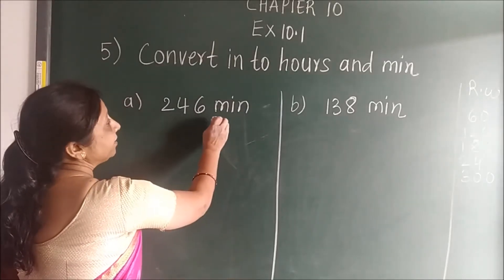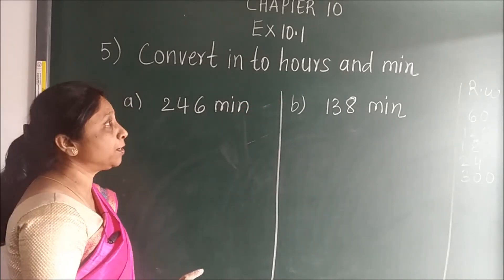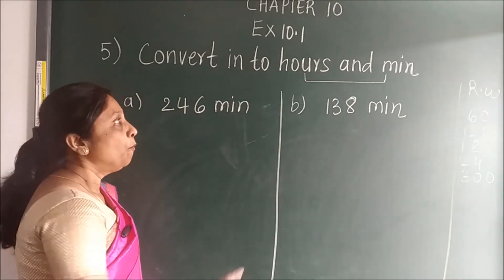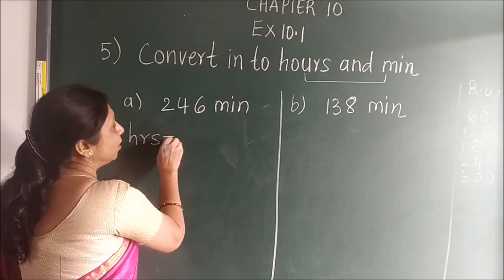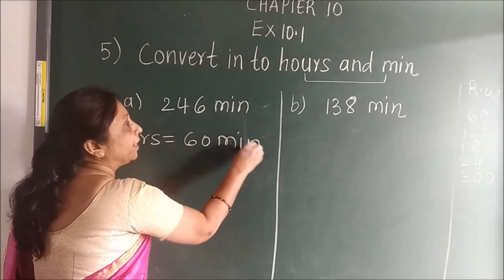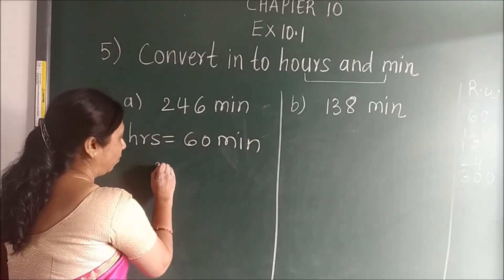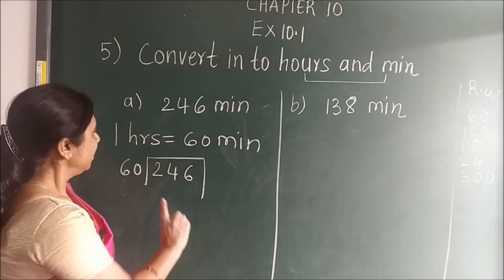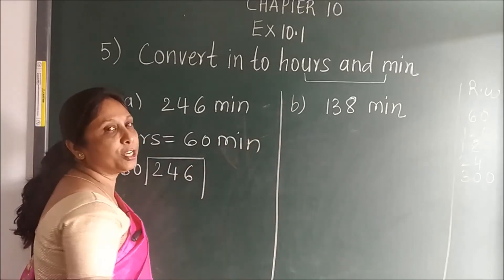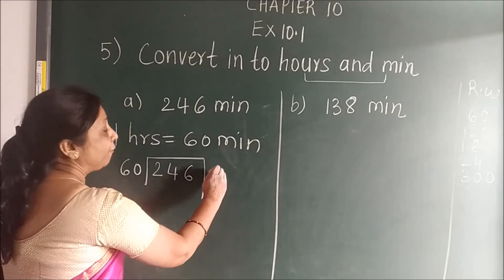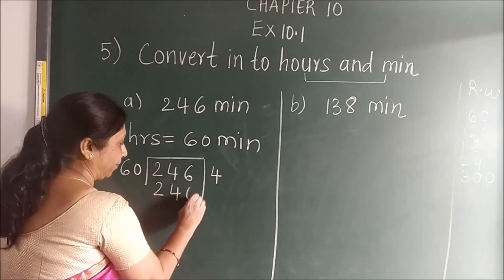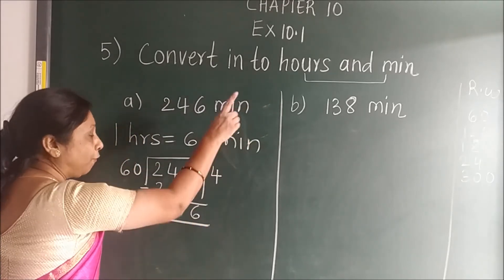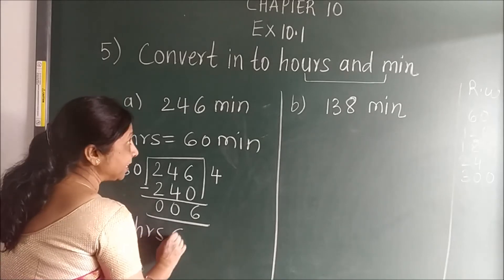Here we see hours and minutes — two things you have to convert. Whenever you have to convert into two things, you have to divide. First write the relation: 1 hour is equal to 60 minutes. Then divide the given number by 60. Using the table of 60: 4 times 60 is 240. When you subtract, you get remainder 6. So the answer is 4 hours and 6 minutes.